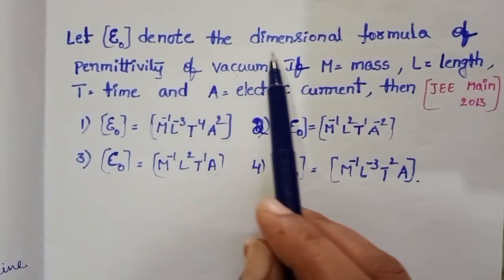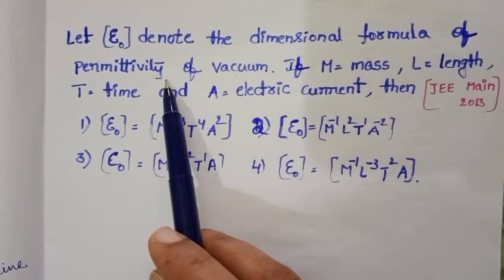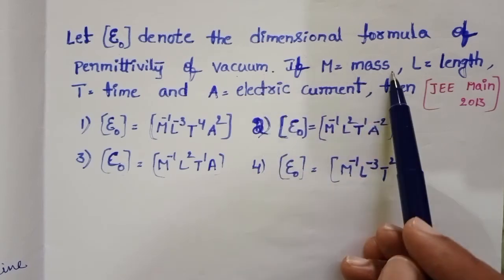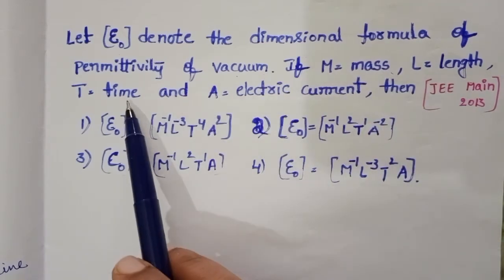Let epsilon 0 denote the dimensional formula of permittivity of vacuum. If M is mass, L is length,